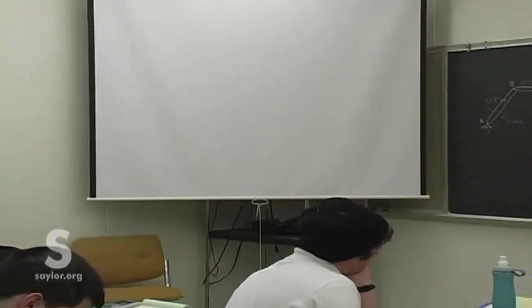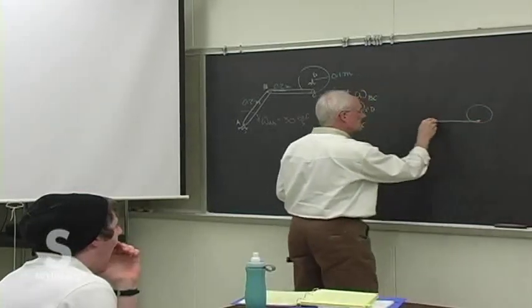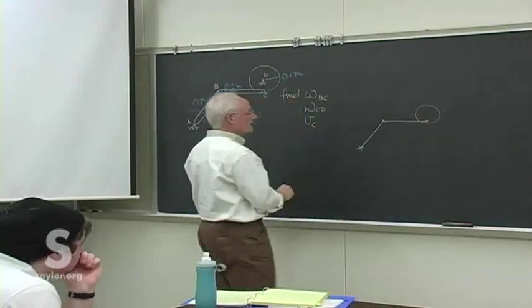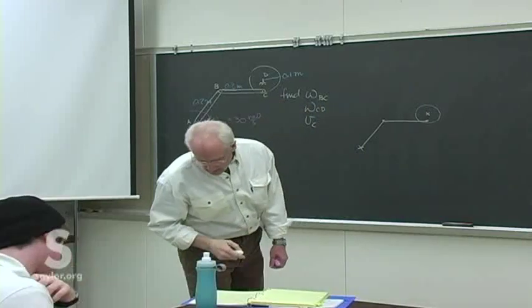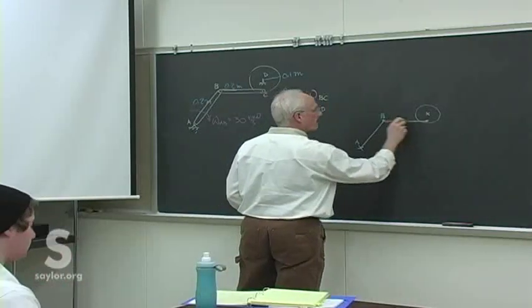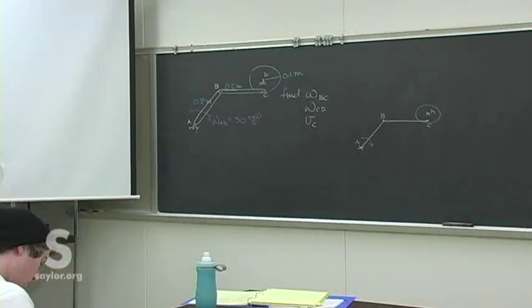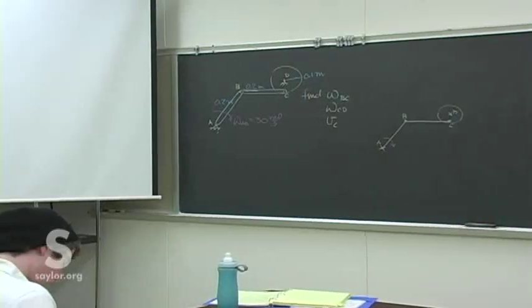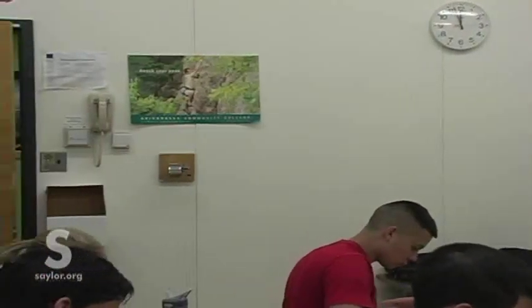It might help if you make yourself a simplified drawing. Make it clear which points don't move, however you want to note that. Figure out where the instantaneous center is. I want you to do that first — show me where you found the instantaneous center to be. Once you've done that, you can solve the rest of the problem and see if we get the same thing.